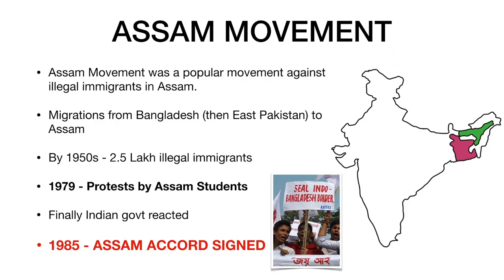What is the Assam Movement? The Assam Movement was a popular movement against illegal immigrants in Assam. Between 1948 and 1971, there were large-scale migrations from Bangladesh — that is, then Pakistan — to Assam. So many people migrated from then Pakistan to Assam.